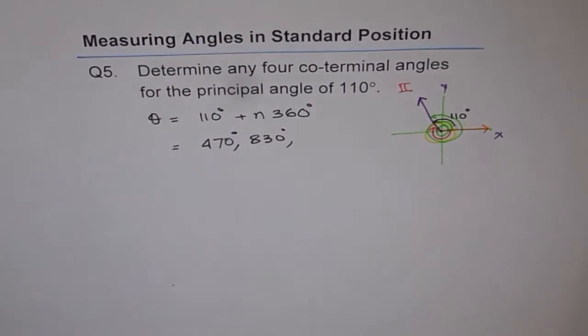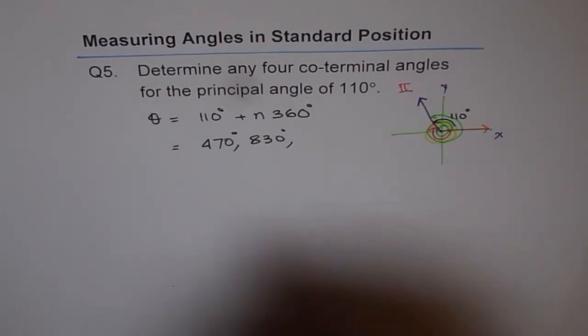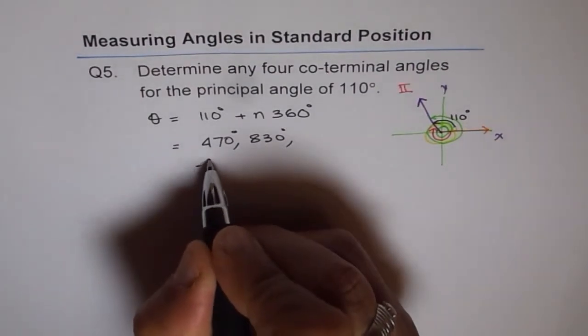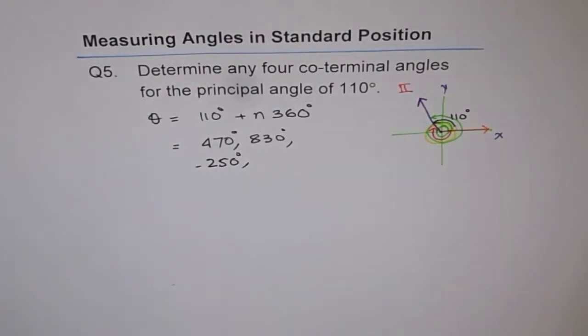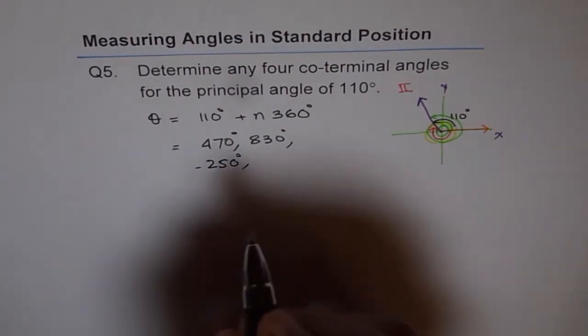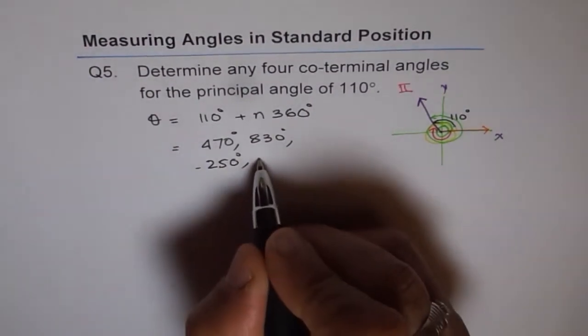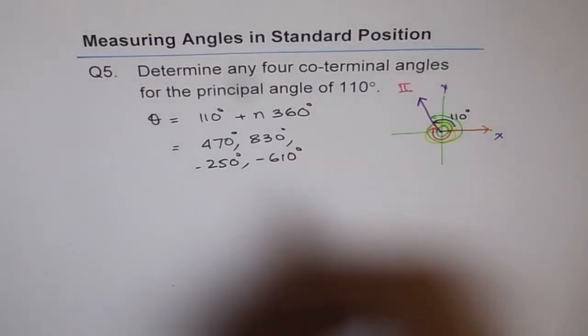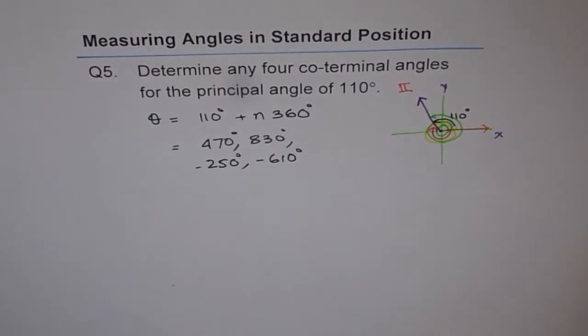We can take away 360 by placing N as minus 1. So we will do 110 minus 360. In that case, we get minus 250 degrees. And further, another circle, which will go clockwise, will give us another co-terminal angle with minus 610 degrees. So these are our four co-terminal angles for the principal angle of 110 degrees.